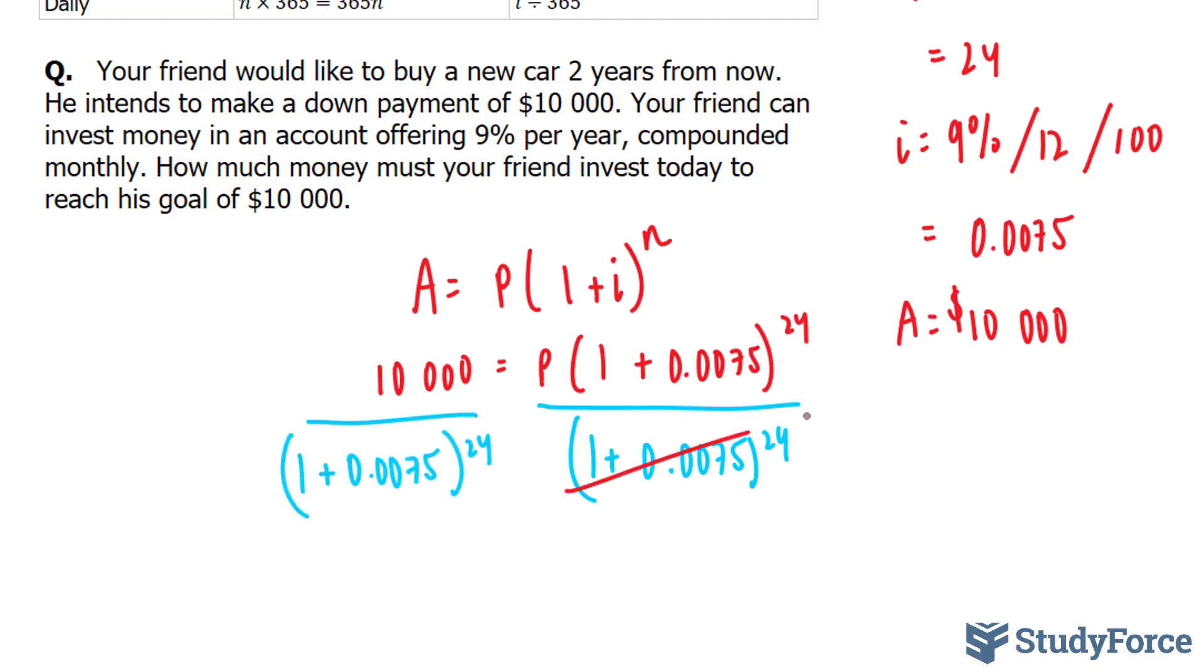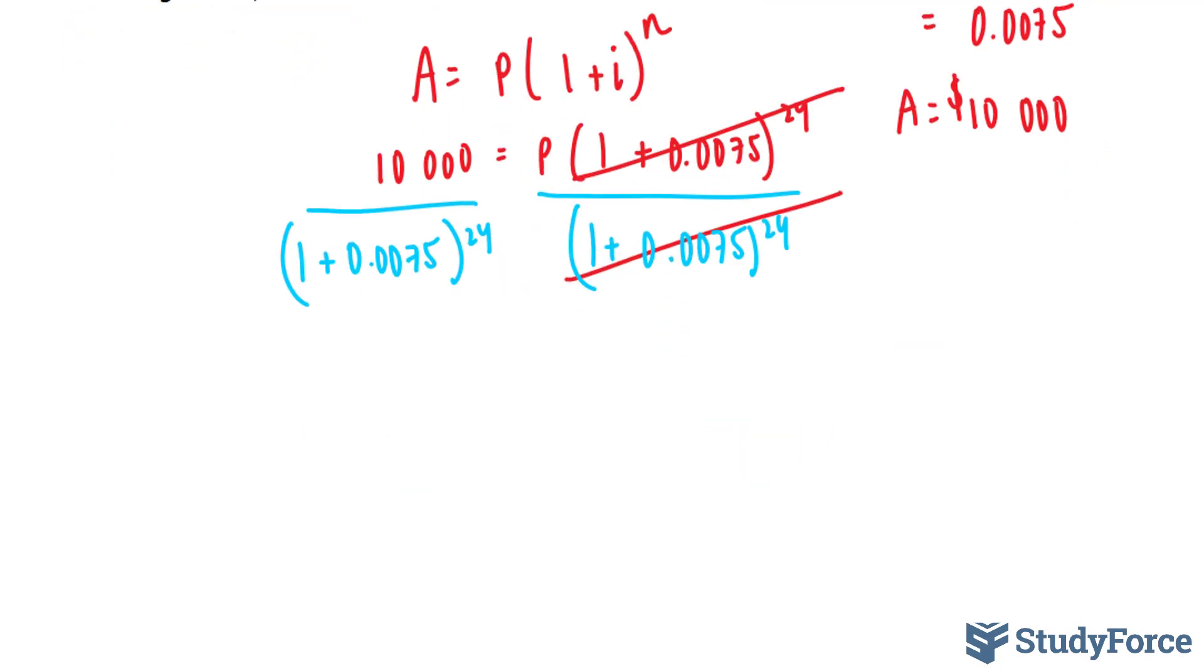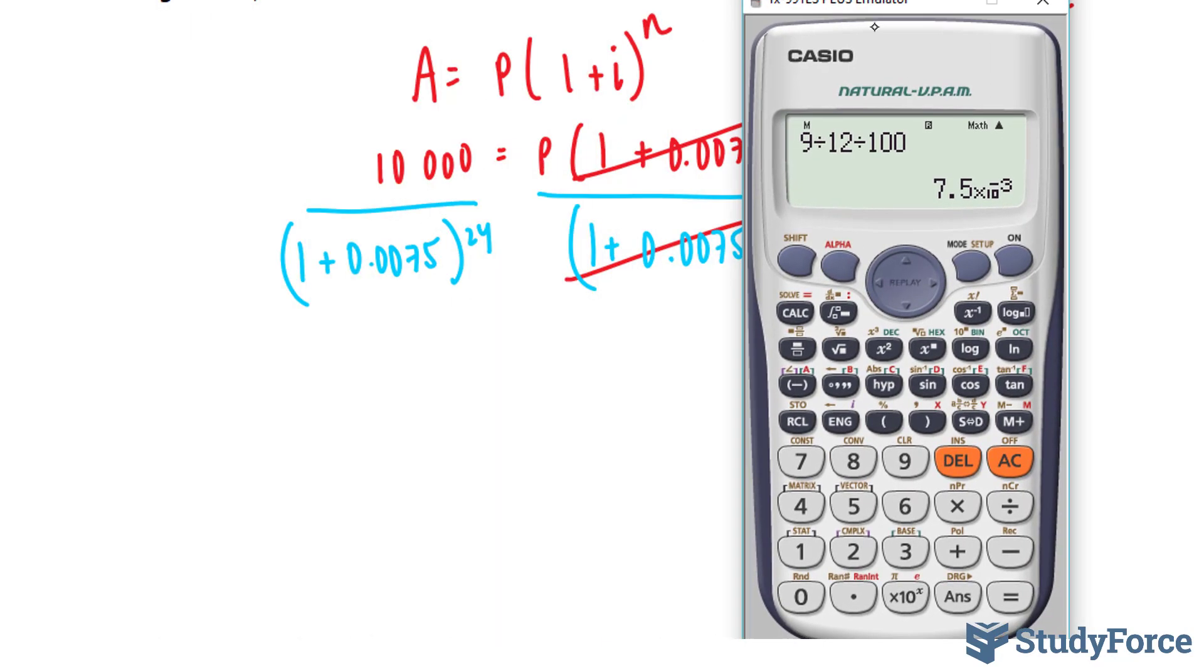This part right here cancels out completely, and we're left with 10,000 divided by this expression. We can do this with our calculator. 10,000 divided by bracket 1 plus 0.0075 to the power of 24.